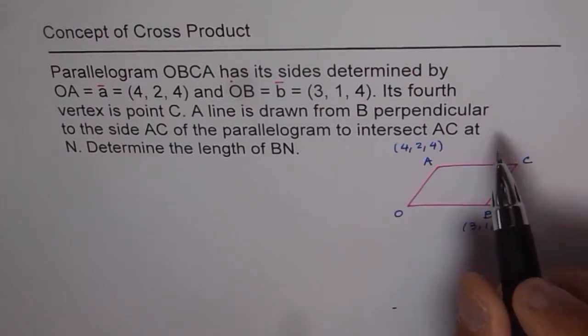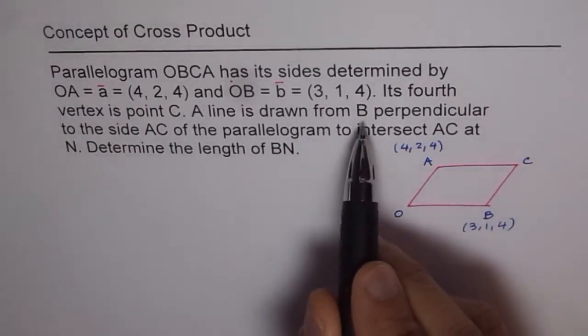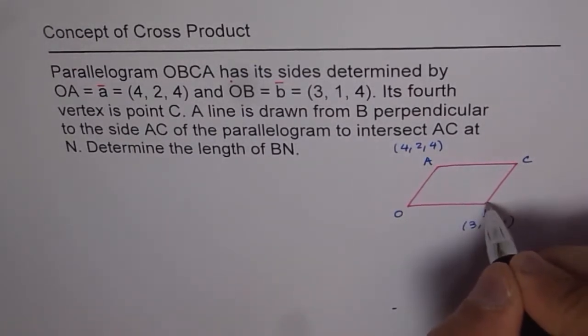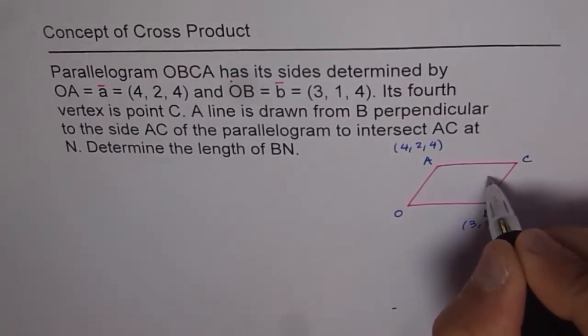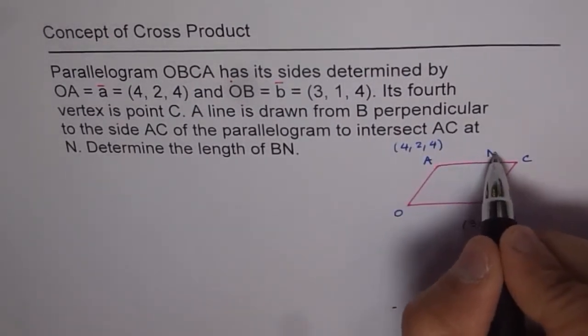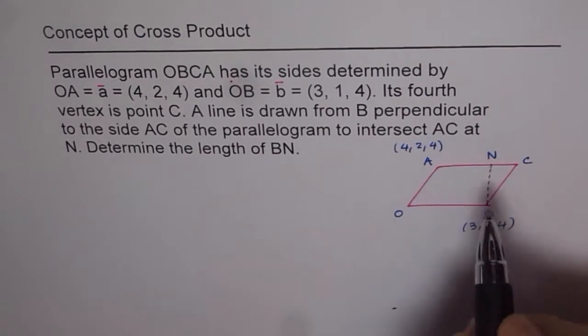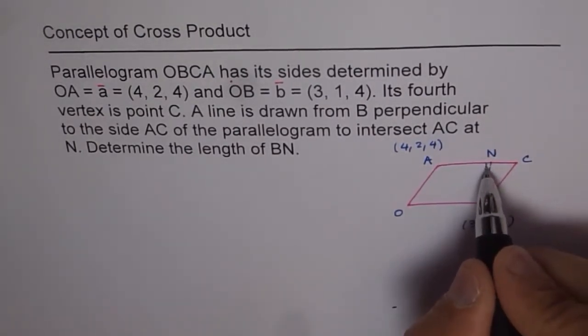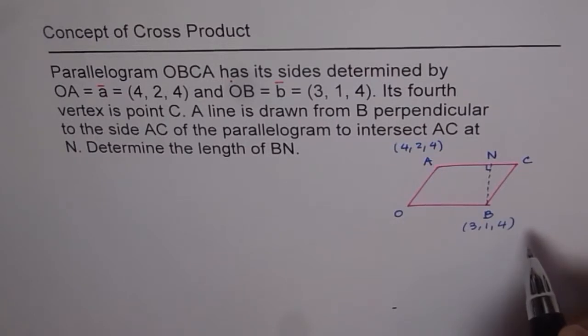Now it says that a line is drawn from B perpendicular to side AC. So let's draw a line perpendicular from B to AC. It intersects AC at N, and let's call it N. Determine the length BN. So we need to find BN. So it's perpendicular like that.